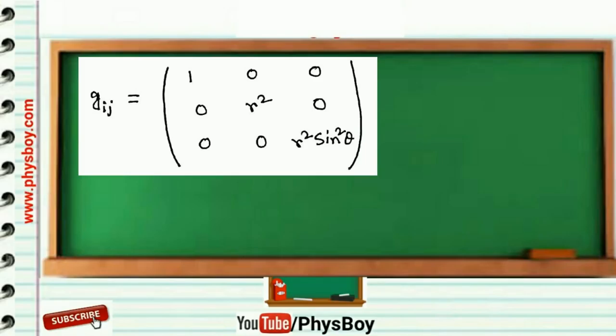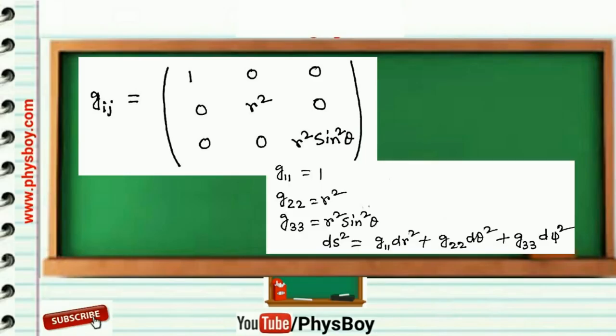The diagonal elements of the matrix: g_11 is equal to 1, g_22 is equal to r square, and g_33 is equal to r square sine square theta. So the metric coefficients will be 1, r square, and r square sine square theta. So option b is the correct answer.